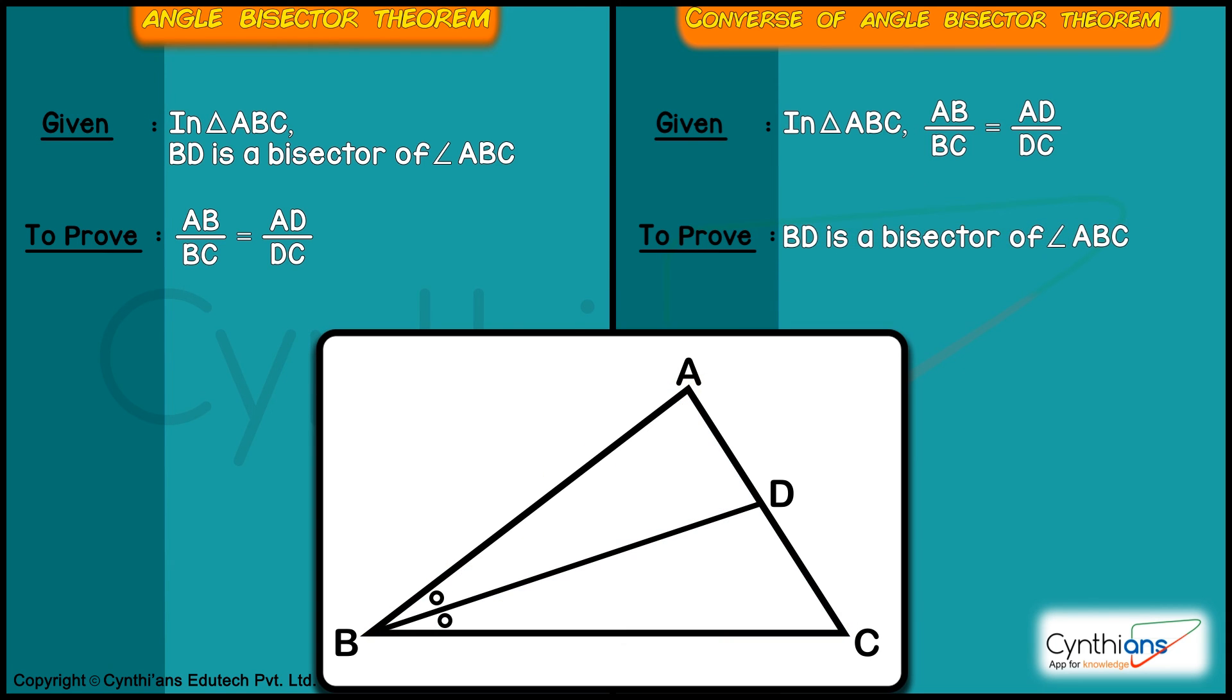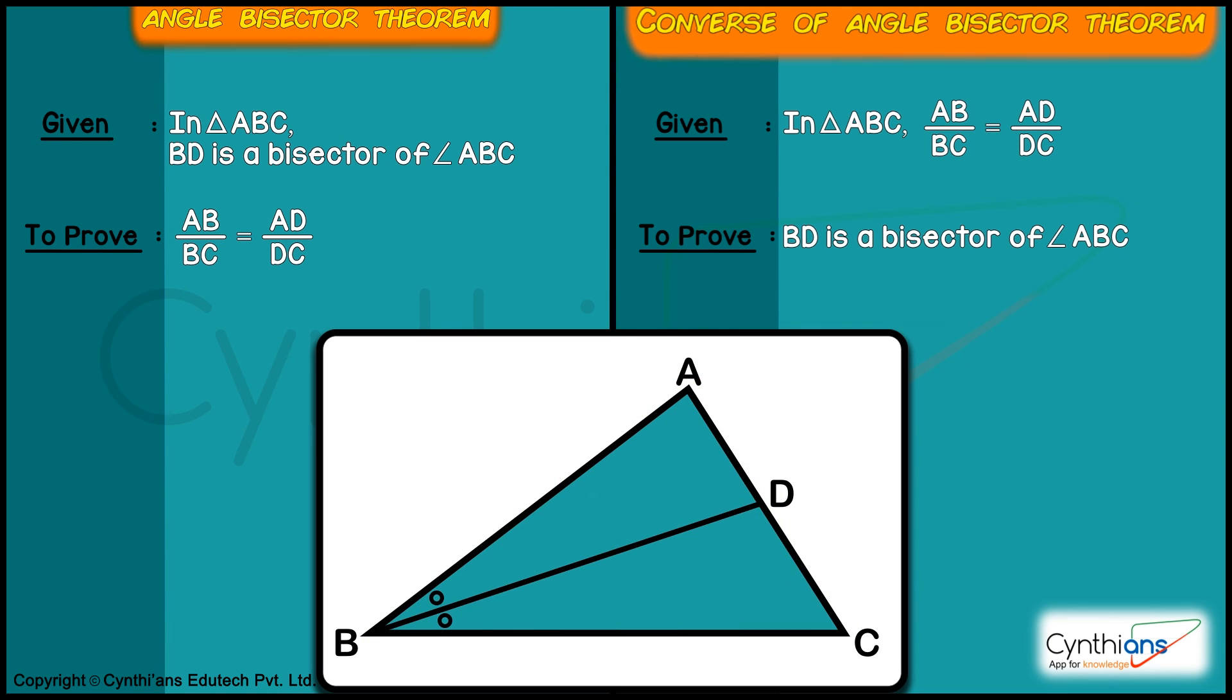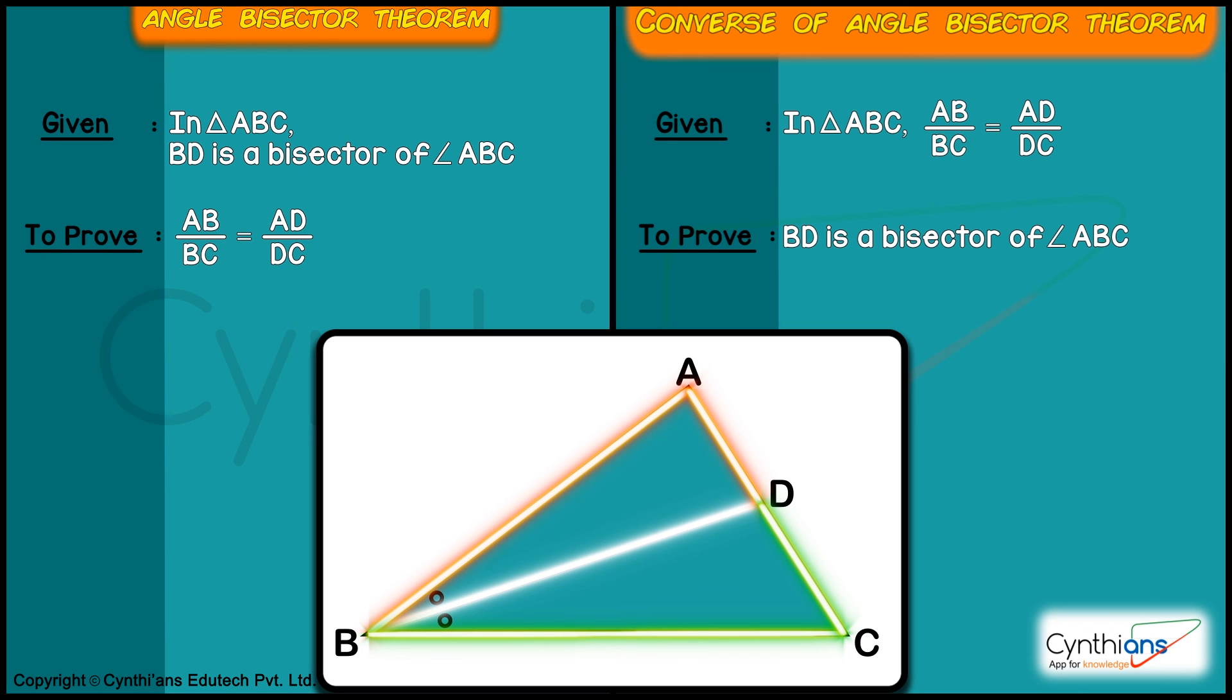So students, I hope you understood the difference between angle bisector theorem, where you will be given angle bisector and you need to prove that the ratios are equal, and the converse of angle bisector theorem, where you will be given the values of the ratios. And if those ratios are equal, then you can say that the line is an angle bisector of the triangle. Thank you.